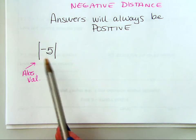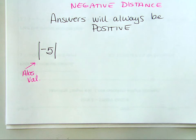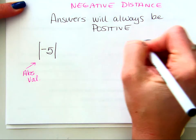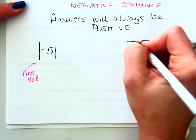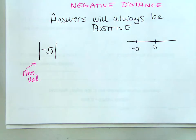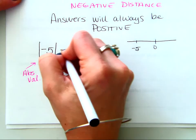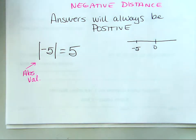So, absolute value means how many spaces from zero is negative five. So, on a number line, watch please. How many spaces away from zero is negative five? Five. Boom. That's it. That's all you do.